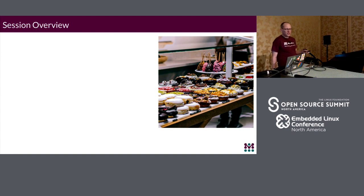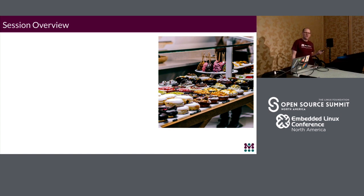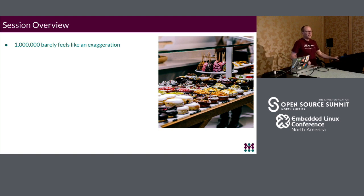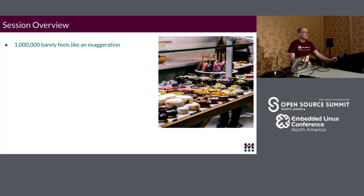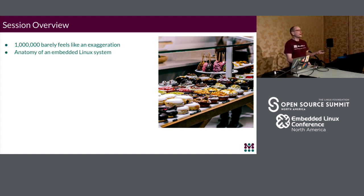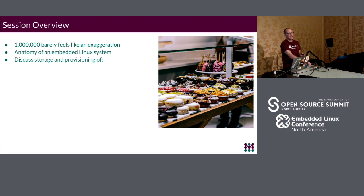Just a brief overview. The idea being that there are a lot of choices out there. When you're bringing up your embedded Linux devices, obviously a million's a bit of hyperbole, but sometimes it doesn't really feel like it. If you've ever worked with a wide variety of boards, you'll realize that there's lots of different ways of getting things on there. I'll talk a little bit about the anatomy of an embedded Linux system so we can understand what pieces we have, where they need to get installed, and why. And then discuss the storage and provisioning of each of those individual components.